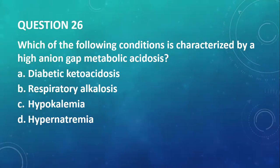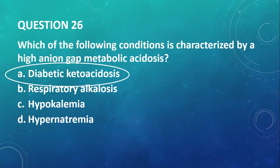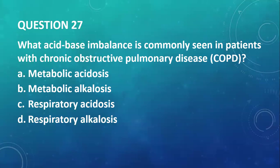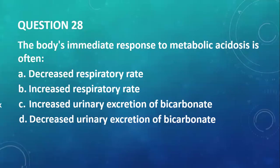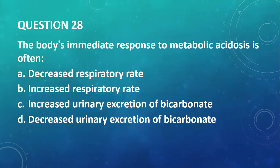Question number twenty-six: which condition is characterized by a high anion gap metabolic acidosis? I would go with diabetic ketoacidosis, because not only do you have acidosis from the condition, but you also have ketone bodies that are acidic in nature — such as acetoacetic acid — giving rise to high anion gap metabolic acidosis. Question number twenty-seven: what acid-base imbalance is commonly seen in patients with COPD? Those people cannot breathe well, so it will be of respiratory origin — respiratory acidosis.